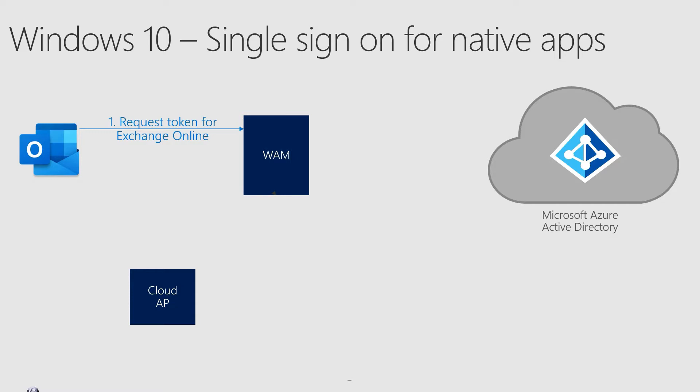WAM forwards this request to Azure AD, but now it adds a primary refresh token to this request by signing it with the session key. As you may remember from the previous video, the session key is a proof of possession key provided by Azure AD when it issues the primary refresh token. This key is protected by the Trusted Platform Module, or TPM, a hardware crypto component on the device.